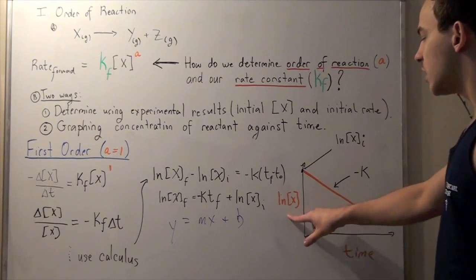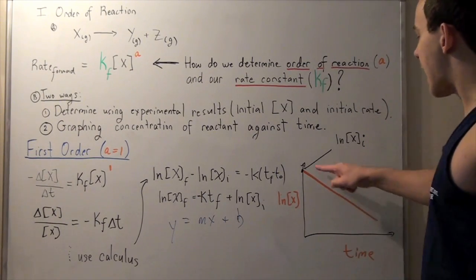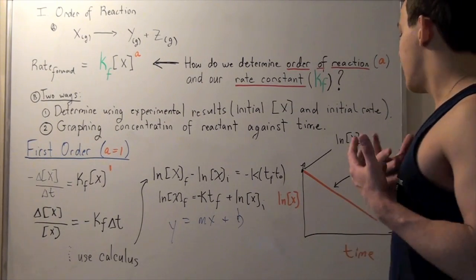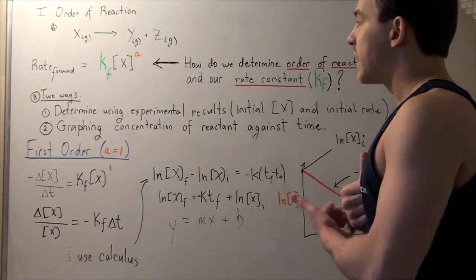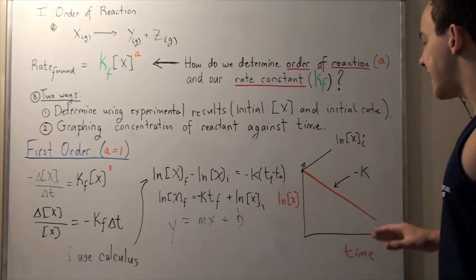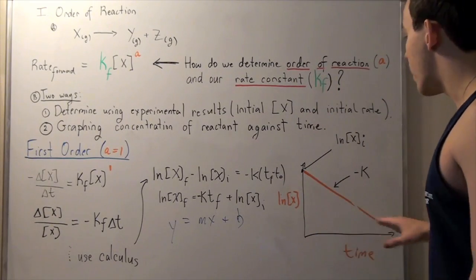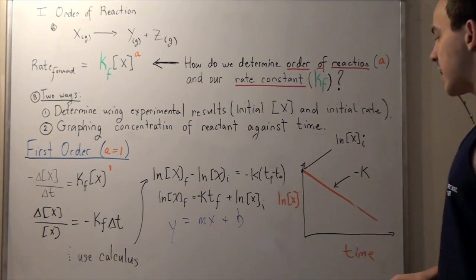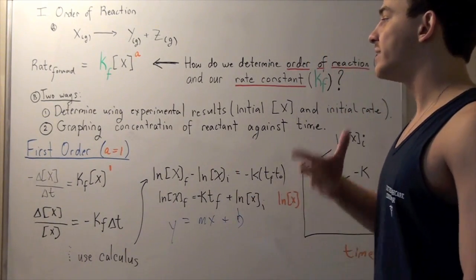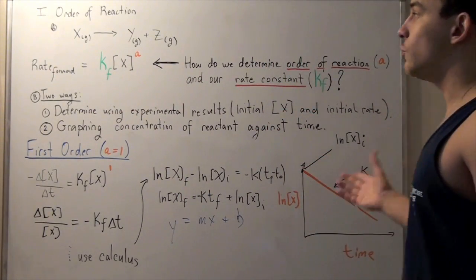Graphing this on an XY plane with ln(concentration of X) on the Y axis and time on the X axis, we again get a straight negative slope line, with slope equal to negative K and Y intercept equal to ln(initial concentration). To find K, we use slope equals change in Y over change in X. If A equals 1 and we graph this equation, we get a straight negative line. If A were actually 0 and we tried graphing this same equation, it would not be a straight line — meaning we could conclude A is not 1. To confirm A equals 0, we'd graph the zeroth order equation and check for a straight negative line.